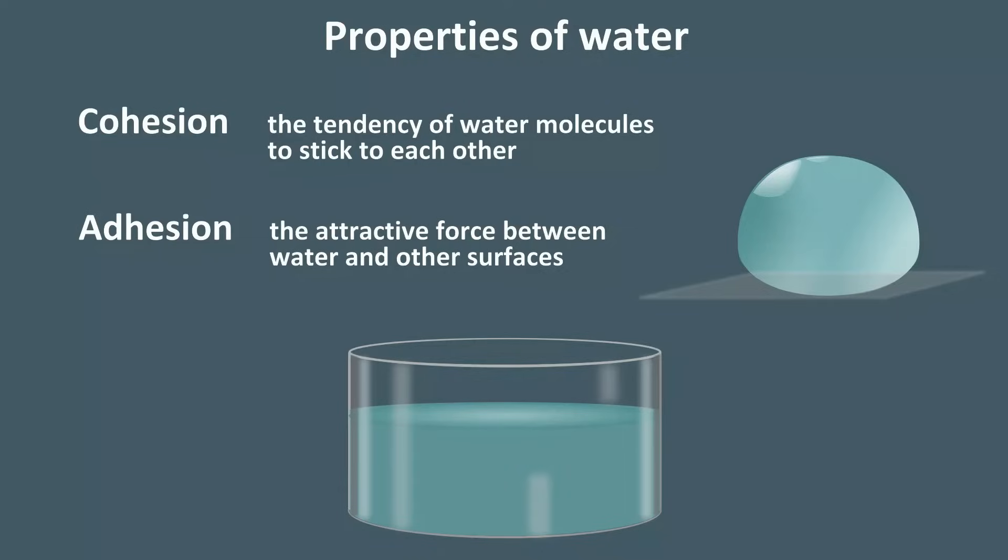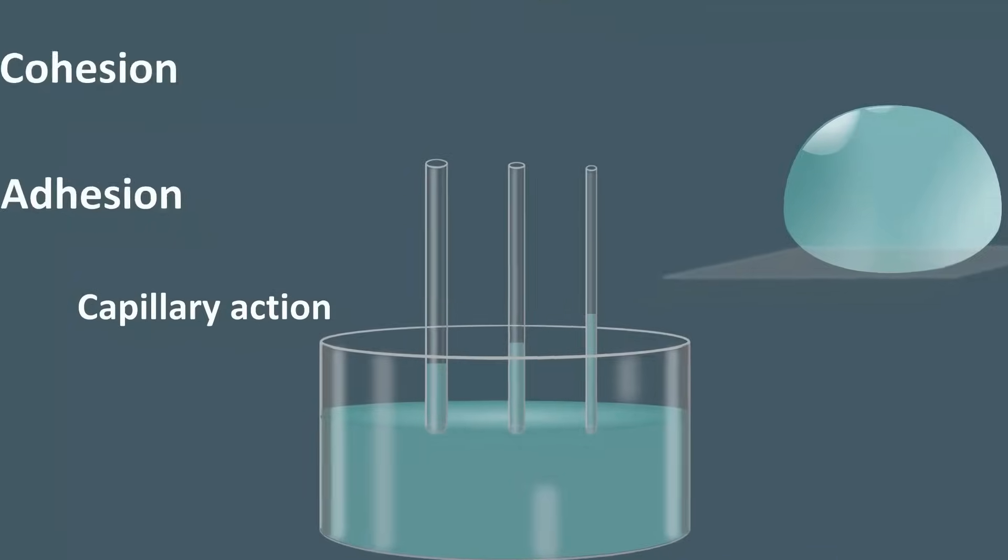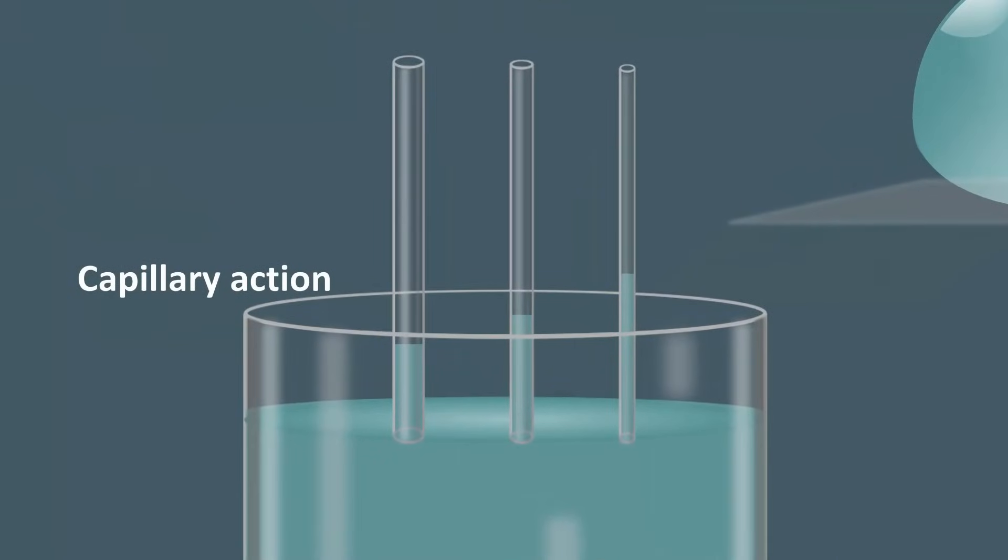Together, water cohesion and adhesion are responsible for capillary action. Have you seen how water moves up glass tubes? The thinner the tube, the higher the water moves. Because of adhesion, the water is pulled up the sides of the glass wall. And because of cohesion, the water column is pulled along.